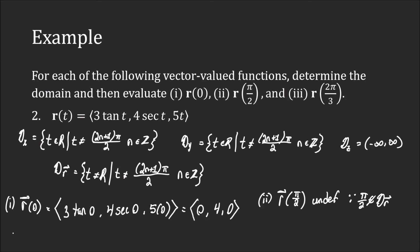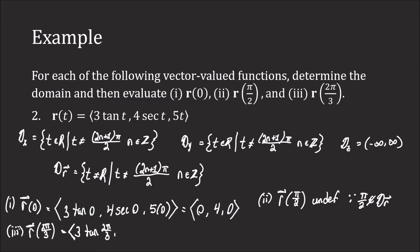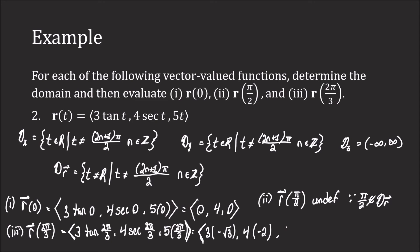For r(2π/3), we compute <3tan(2π/3), 4sec(2π/3), 5·(2π/3)>. Tangent of 2π/3 is −√3, secant of 2π/3 is −2, and 5 times 2π/3 is 10π/3. So we are left with the vector <−3√3, −8, 10π/3>.